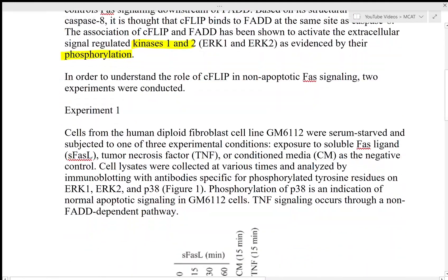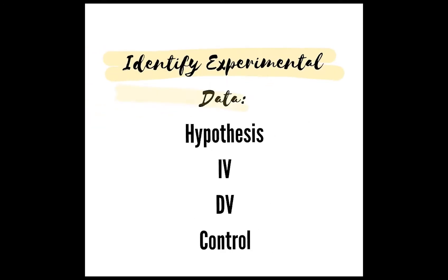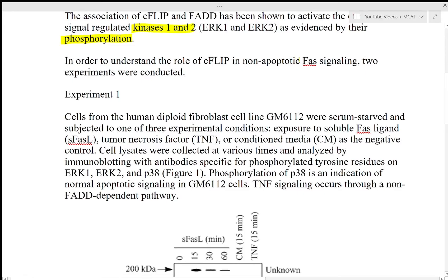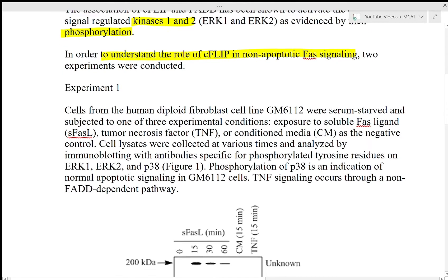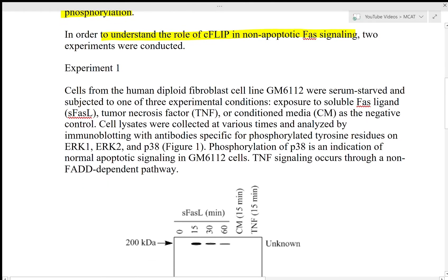My next tip would be to identify and highlight the hypothesis, independent variable, dependent variable, and control. Here I'm highlighting why the researchers are conducting the experiment, which is to understand the role of CFLIP in non-apoptotic FAS signaling. I'm also highlighting the three experimental conditions which are FAS ligand, TNF, and CM, which is the negative control.